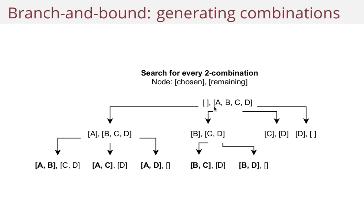So in the first child you add A over to chosen. In the second one you add B, and you add C and you add D. And you actually remove the elements before the one that you moved over.